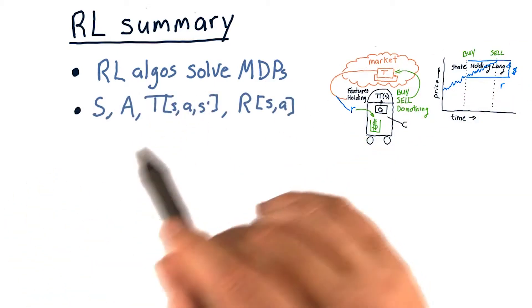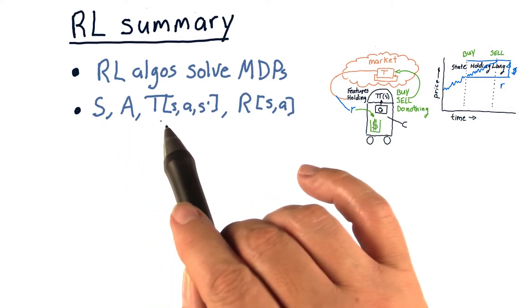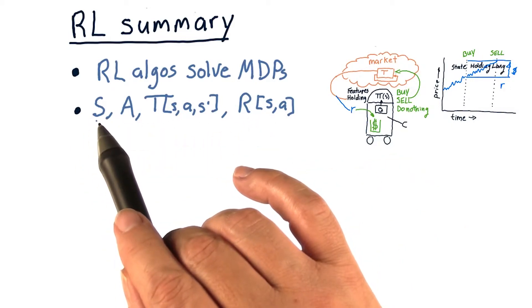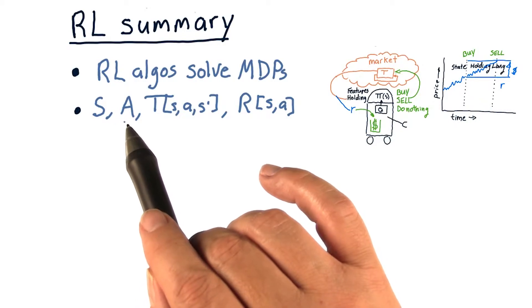A Markov decision problem is defined by S, A, T, and R, where S is the potential states and A are the potential actions.